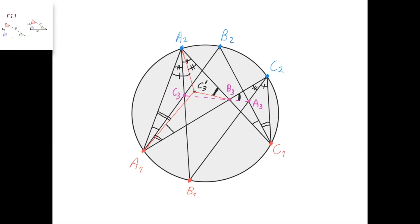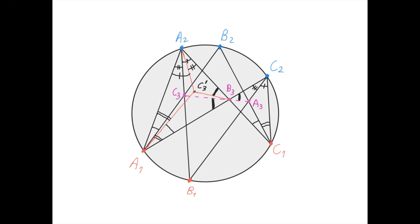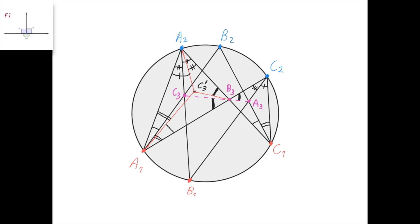Therefore this angle here equals this angle here. But since C3' and C3 are isogonal conjugates in the triangle, this angle equals this angle. So we conclude that this angle equals this angle, which means the sum of these two angles is 180 degrees, meaning that C3, B3, and A3 lie on a straight line.